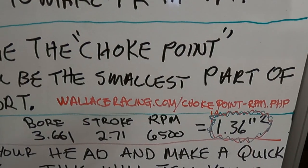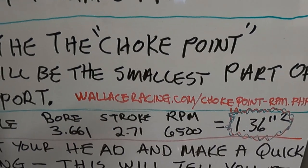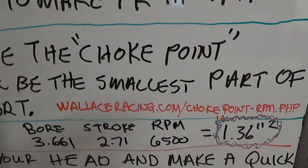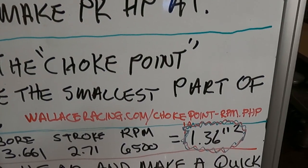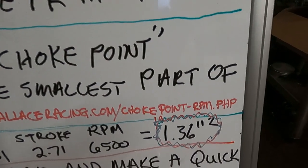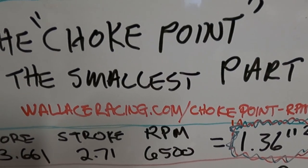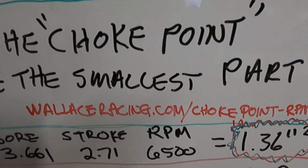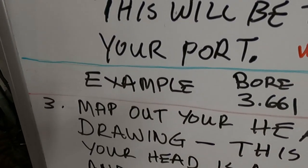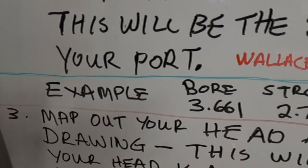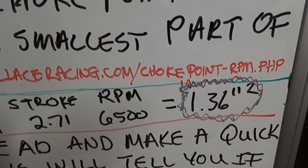To find the choke point I go to Wallace Racing calculators — they have a lot of cool stuff, you should check them out. The link is wallaceracing.com/choke-point-rpm.php. It'll take you right there. Under finding choke points by RPM, it'll want to know your bore, your stroke, your RPM, and then it's going to spit out a number.